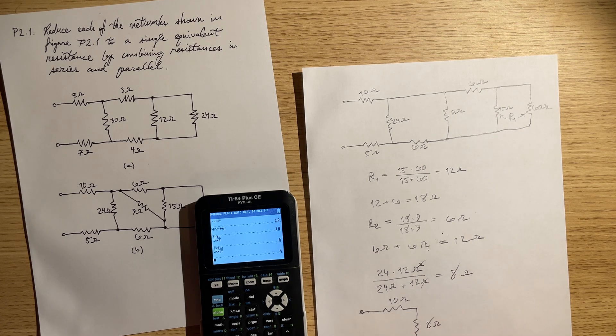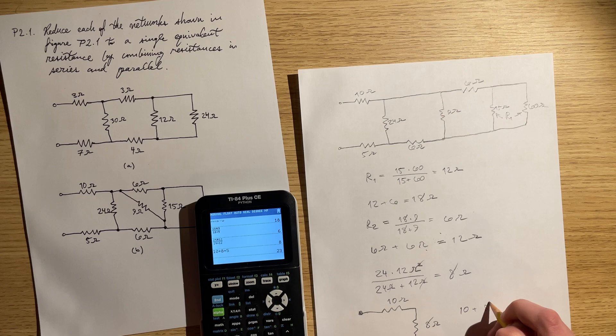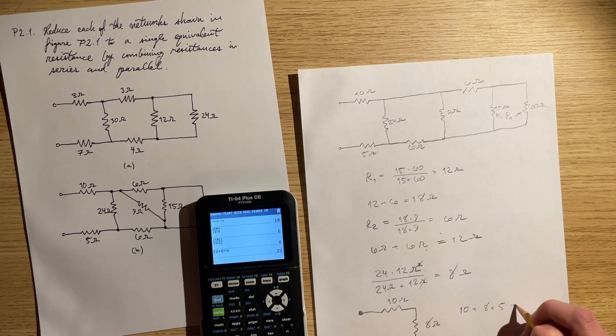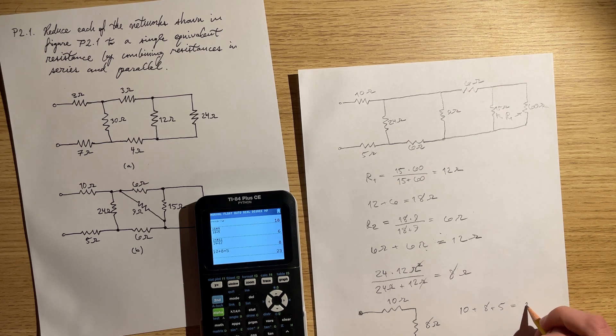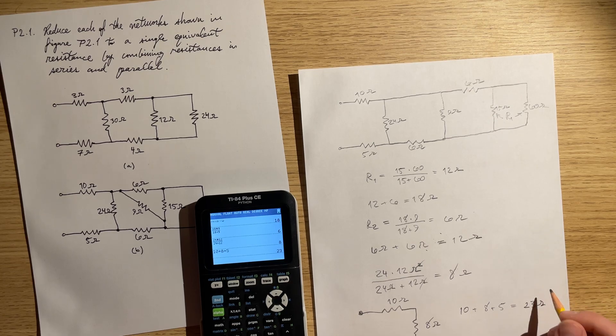Now these are all in series, so it's just going to be 10 plus 8 plus 5 ohms. 10 plus 8 plus 5 ohms is equal to 23 ohms.